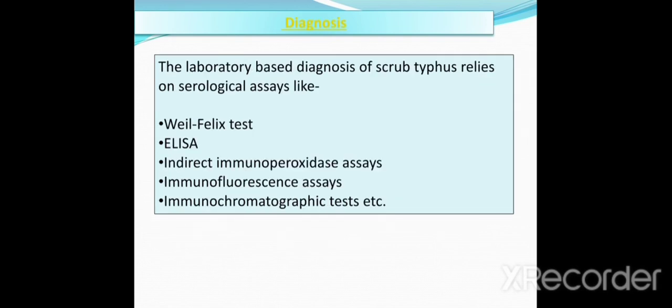The laboratory-based diagnosis of scrub typhus relies on serological assays such as the Weil-Felix test, ELISA (enzyme-linked immunosorbent assay), indirect immunoperoxidase assay, immunofluorescence assay, and immunochromatographic tests.